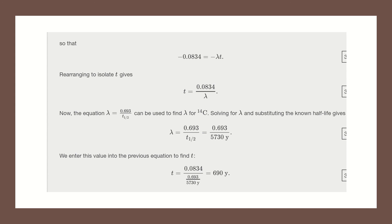Now, this does not mean that the shroud is 690 years old. This means that it was a material from 690 years ago. So we take the year that it was tested, 1988, and we subtract 690 years. This gives us about 1300. Our calculation is only accurate to two digits, so that year is rounded to 1300. The values obtained at the three different independent laboratories gave a weighted average of about 1320. What this means is that the Shroud of Turin is consistent with the first record of its existence, and not with the period in which Jesus lived. So they were able to determine that this material was indeed a fraud.